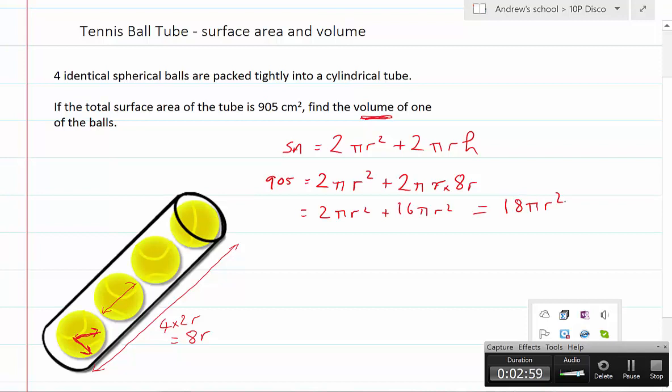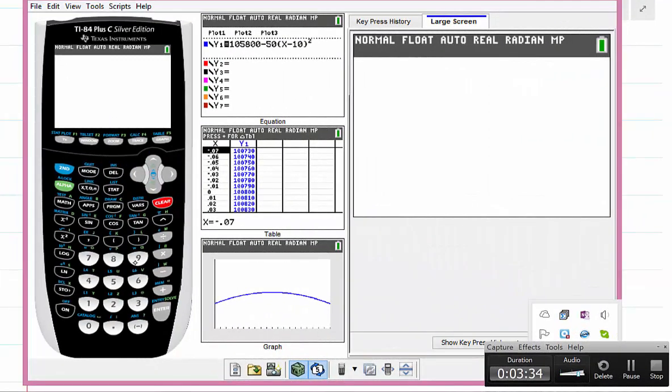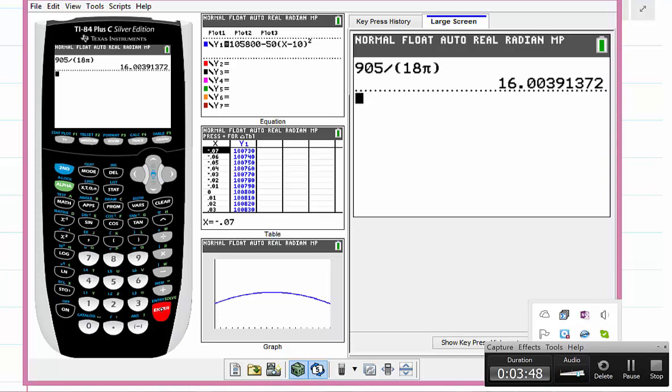Hopefully we can find r from this. So if 18πr² needs to equal 905, so 905 divided by 18π gives us 16.00.